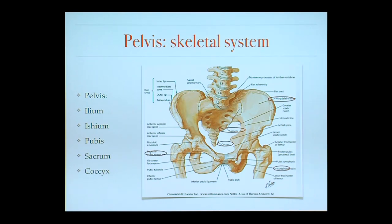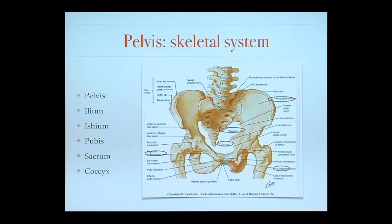The skeletal system is the foundation of the pelvis, incorporating several bones: the hip bones, which include the ilium, the ischium, and the pubis, as well as the sacrum and coccyx. The ilium is the component on the side, the ischium is down here, the pubis is here with the pubic symphysis ligament connecting the two together, and the tailbone is known as the coccyx. The sacrum is here.